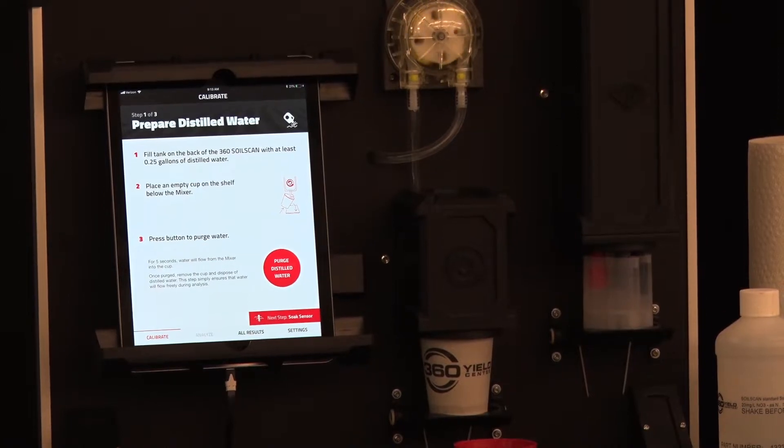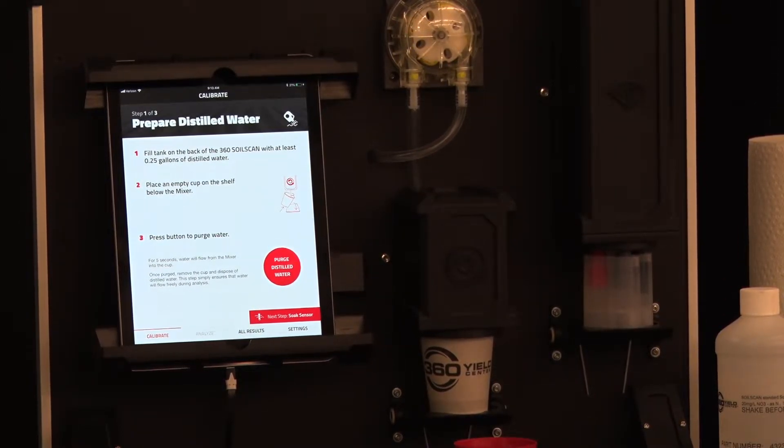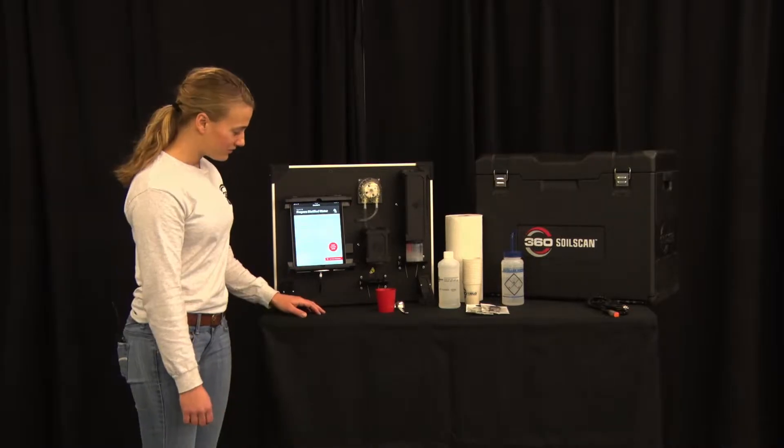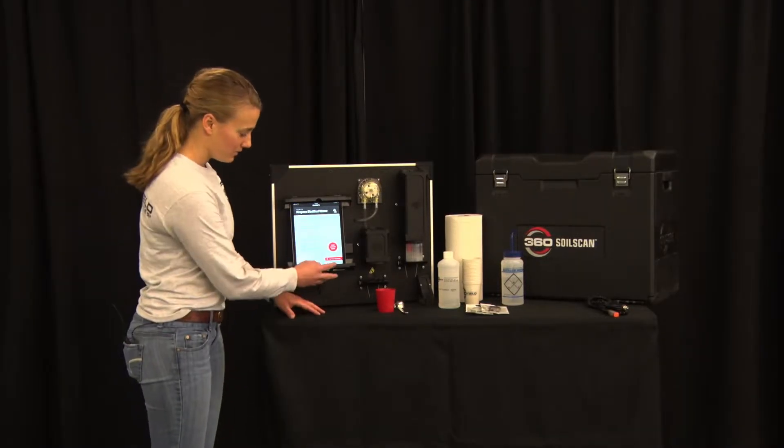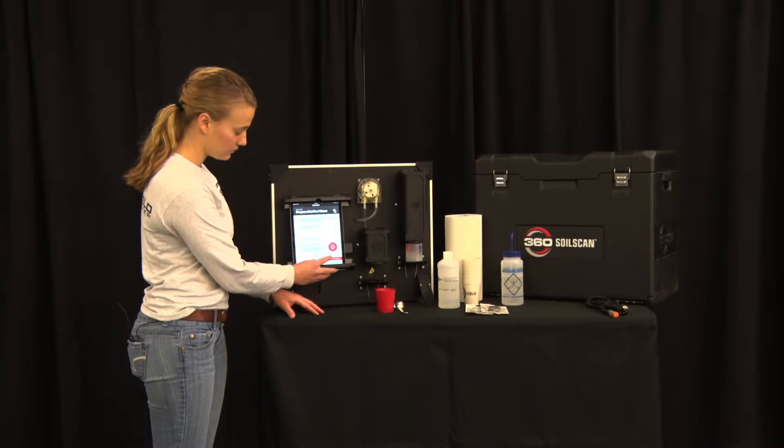The system will run allowing distilled water to run throughout it. The SoilScan app provides step-by-step instructions. Simply follow the on-screen instructions. After purging the water we are soaking our sensors. So just select soak sensors.